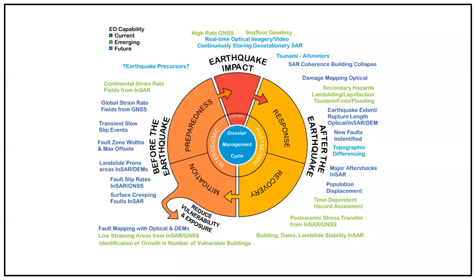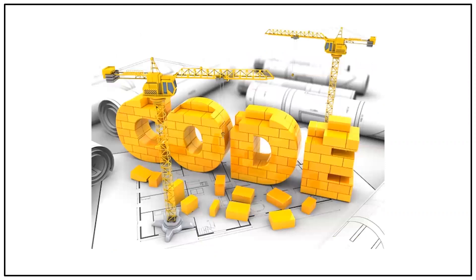Earthquake hazard reduction is the process of minimizing the risks posed by earthquakes to people, buildings, infrastructure, and the environment. It involves a range of actions and measures aimed at minimizing the impact of earthquakes, including Building Codes — the implementation and enforcement of building codes that ensure buildings and infrastructure are designed and constructed to resist earthquakes.